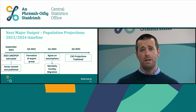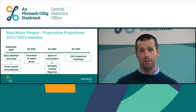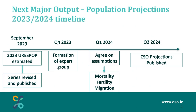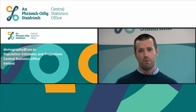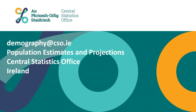That completes the presentation for the 2023 estimates. The next major output from the population estimates and projections section of the CSO will be the next round of population projections, which take place when a census of population is finalised. The usually resident population estimate for 2023 is published today, along with the revised series. Between now and the end of the year, the CSO will form an expert group to agree on assumptions on mortality, fertility, and migration for the next round of population projections, which will be published in Q2 2024. If you have any queries, please send them to demography@cso.ie.